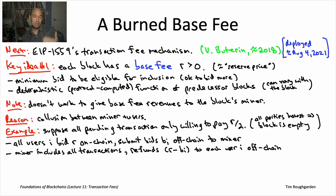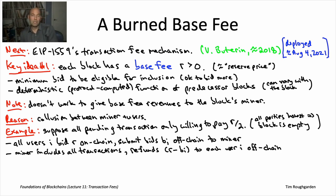In this collusion scenario, the base fee becomes completely pointless — it doesn't exclude any transactions. All transactions remain eligible, with the difference between their willingness to pay and the base fee made up by the miner's off-chain refund. This attempt to have a base fee and transfer revenues to the miner fails utterly — you get nothing different from a first-price auction. It's as if the base fee R were equal to zero.